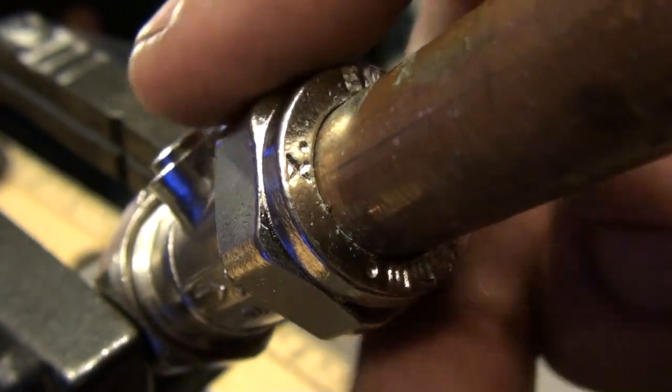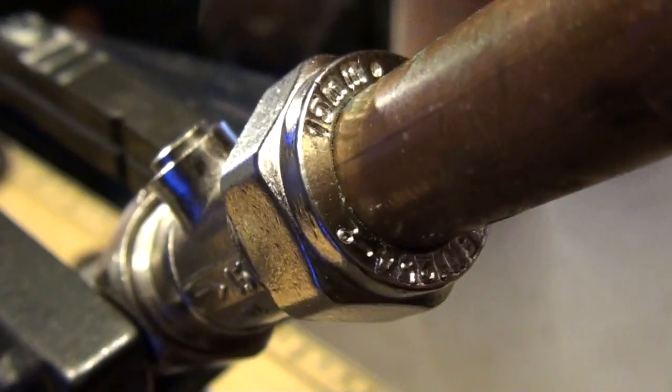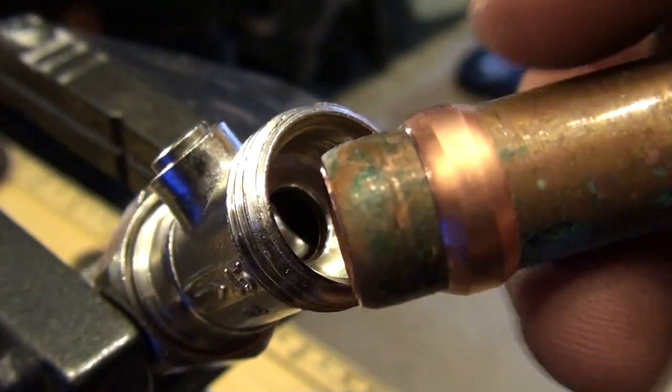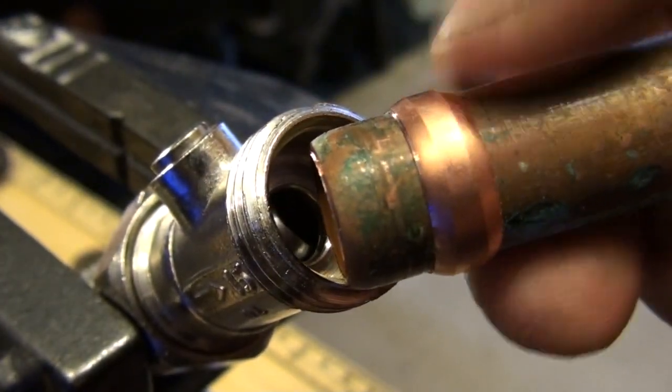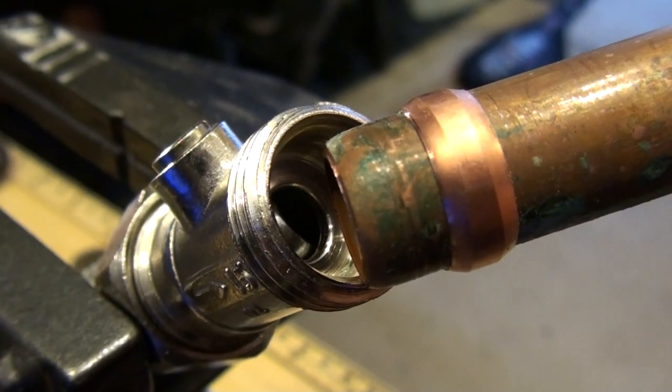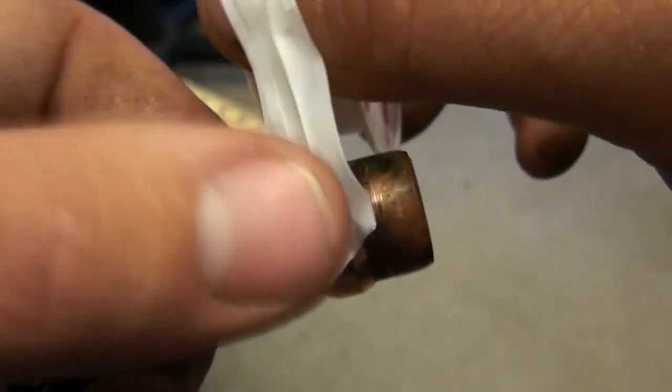If we remove the pipe, we can see the olive is now tight on the pipe. Sometimes you can add PTFE tape to really make sure of a good seal.